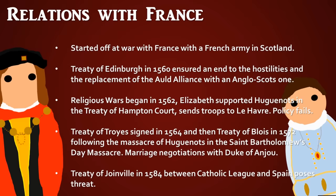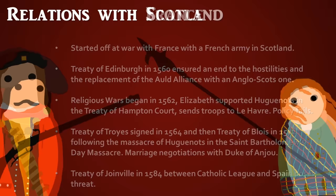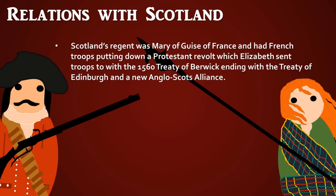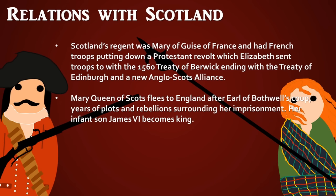In 1584 the Treaty of Joinville between the Catholic League — French Catholics — and Spain posed a huge threat if the two powers combined to attack England. Scotland at the time was under the regency of Mary of Guise, due to the marriage alliance with France, and French troops were sent to Scotland to put down a Protestant revolt. However, Elizabeth intervened, sending troops via the 1560 Treaty of Berwick, helping the Scottish Protestants to win.